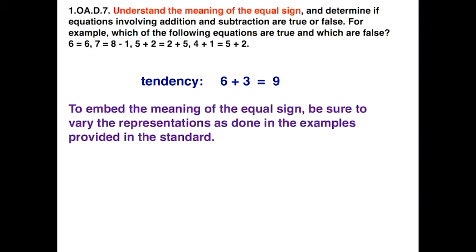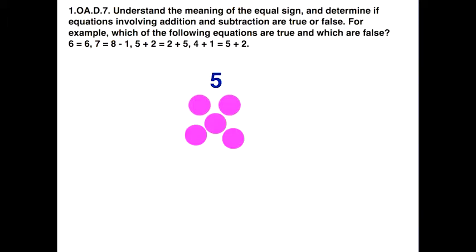To embed the meaning of the equal sign, be sure to vary the representations as done in the examples provided in the standard. We need to vary where the action is needed and where the answer is placed. So something like 7 is equal to 8 minus 1, where we have the unknown on the left-hand side. Or we might adjust that to 7 is equal to some unknown minus 1. At this grade level, it's definitely a good idea to use physical representations and manipulatives to help with understanding.